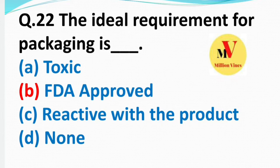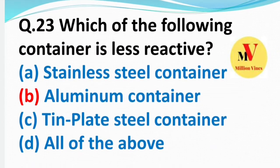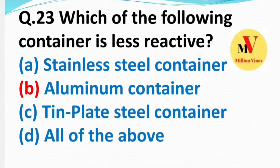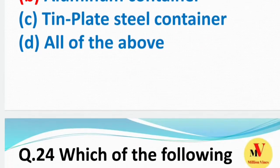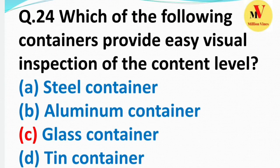The following container is less reactive — the right answer is B — aluminium container. Next question: Which of the following container provides visual inspection of the content level?